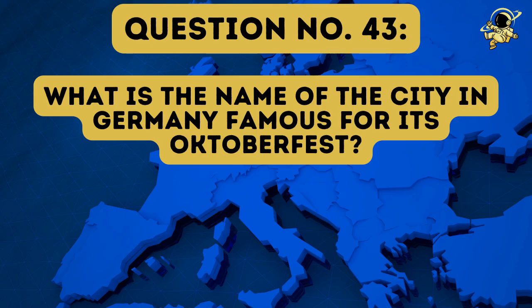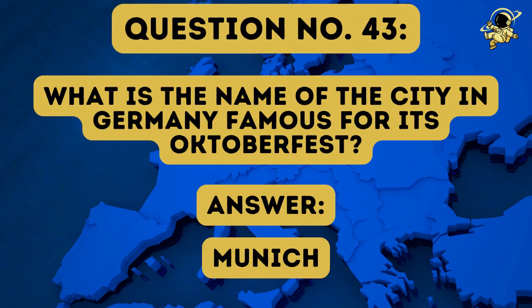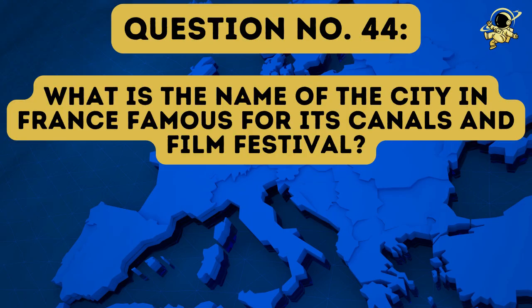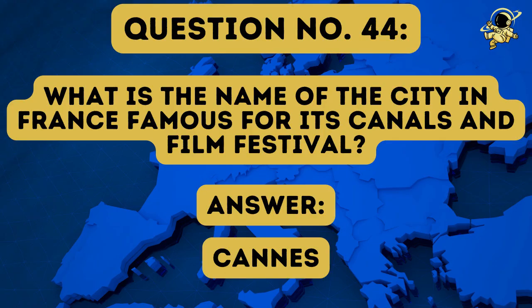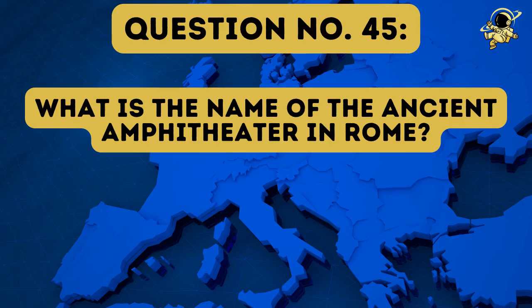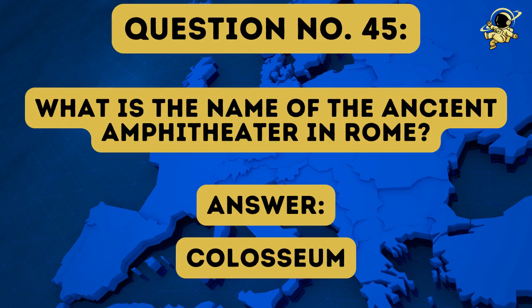Question number forty-three: What is the name of the city in Germany famous for its Oktoberfest? The answer to question number forty-three is of course Munich. Question number forty-four: What is the name of the city in France famous for its canals and film festival? And the answer to question number forty-four is Cannes. Question number forty-five: What is the name of the ancient amphitheater in Rome? And the answer to question number forty-five is the Colosseum.